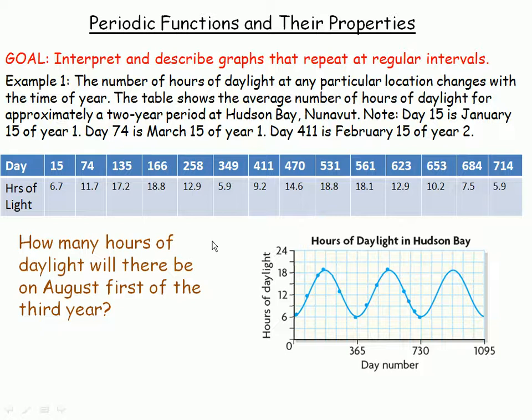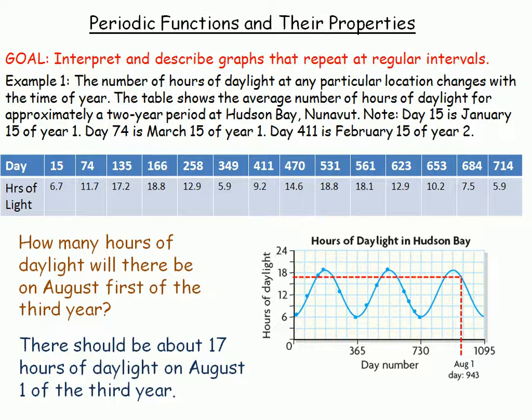We could add together all the days in two years, 365 and 365, and the number of days in January, February, March, April, May, June, July, and then August 1st. We could actually do just August 1st of any year because it should be the same hours of daylight. But August 1st of the third year for this graph would be the 943rd day. If we draw a line from the 943rd day up to here and then across, we'll find that's the number of hours of daylight on August 1st of the third year. So there should be about 17 hours of daylight on August 1st.